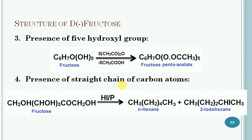Next is the presence of 5-hydroxyl groups. Fructose reacts with acetic anhydride to form fructose pentaacetate, which indicates that fructose contains 5-hydroxyl groups. As fructose does not lose water easily, each hydroxyl group must be attached to a different carbon atom.